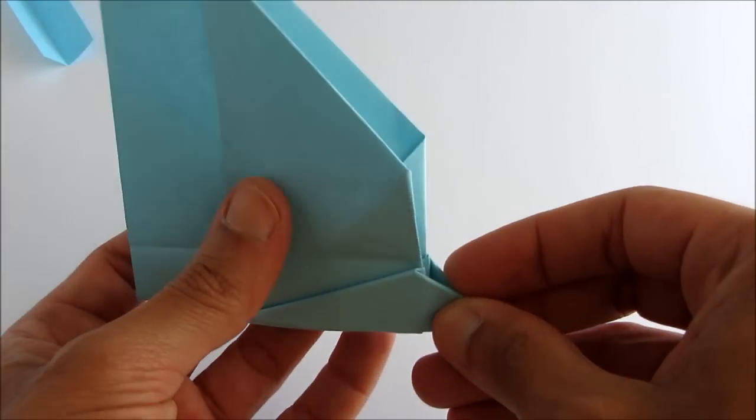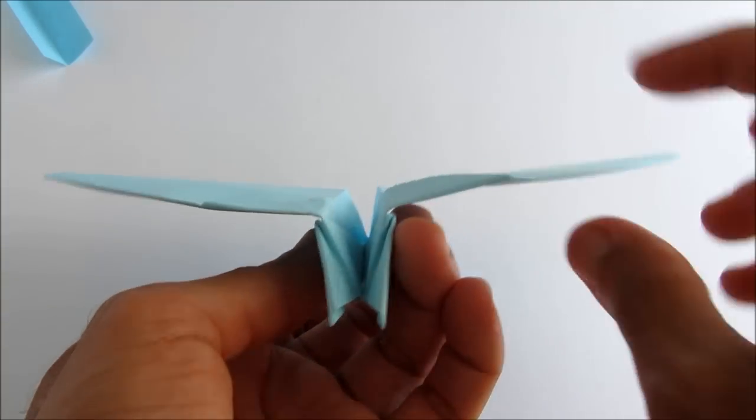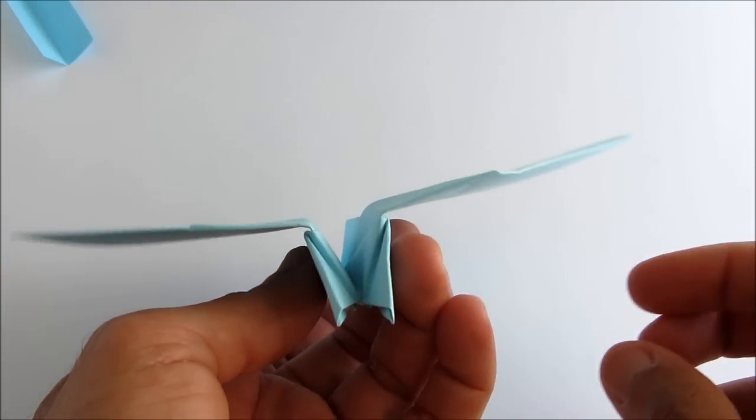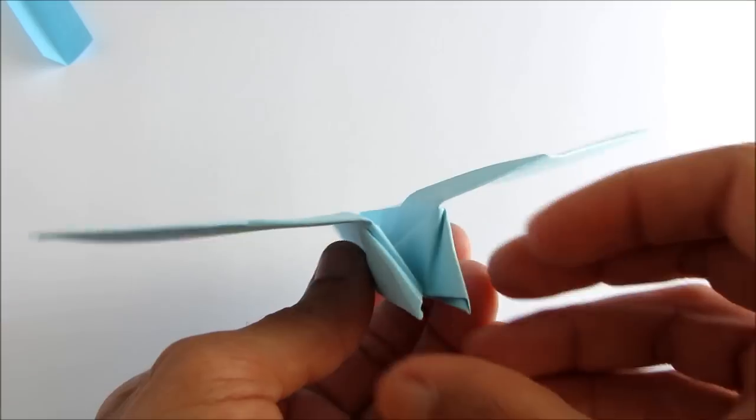And then unfold the wings. And looking from the front or the back, the wing should have the same angle with the body. Slightly upwards.